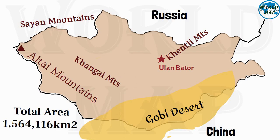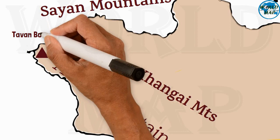Tavan Bogd Peak — its height is 4,374 meters.